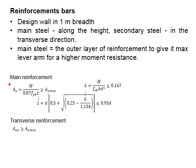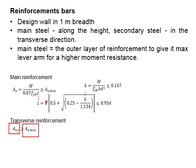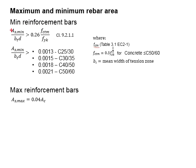The required amount of reinforcement bar must be at least greater than the minimum required reinforcement. For the transverse or secondary reinforcement, the provided reinforcement bar amount also needs to be at least greater than the minimum area of reinforcement. The minimum amount of reinforcement bar can be determined using two equations from clause 9.2.1.1 of Eurocode 2.